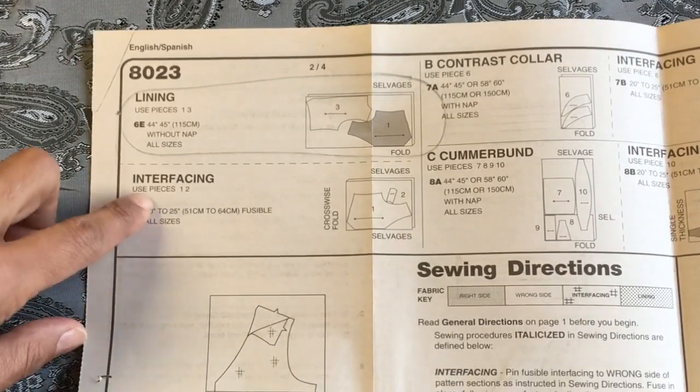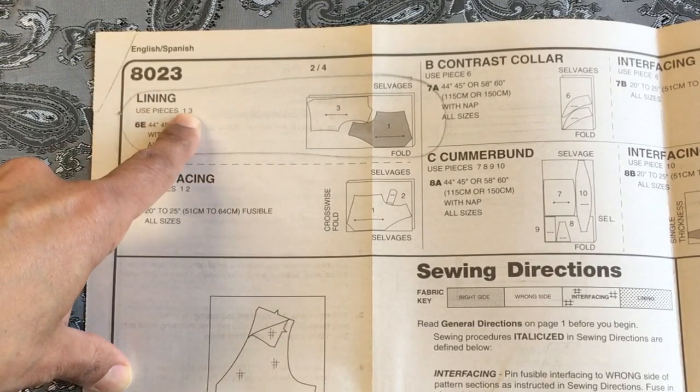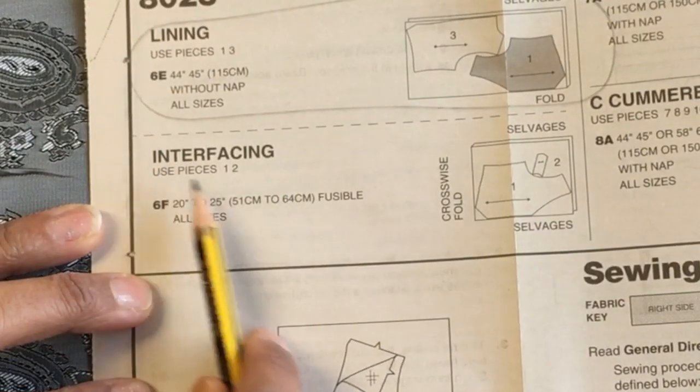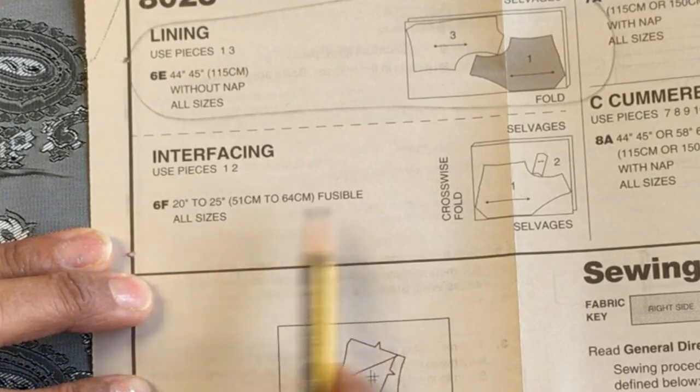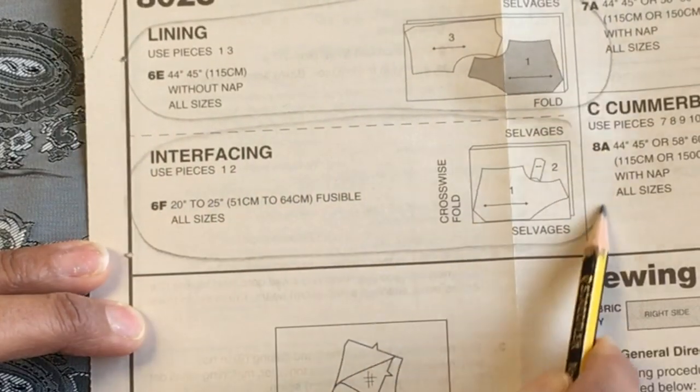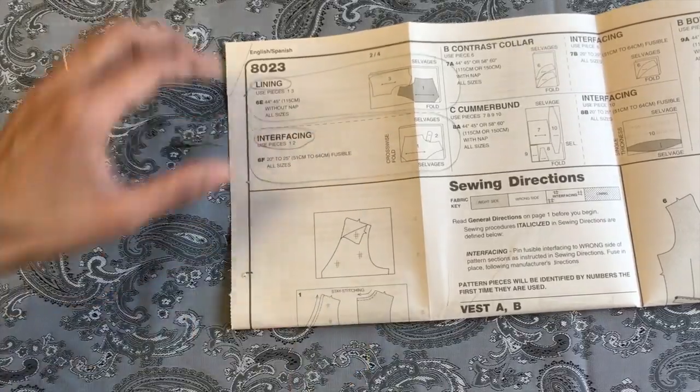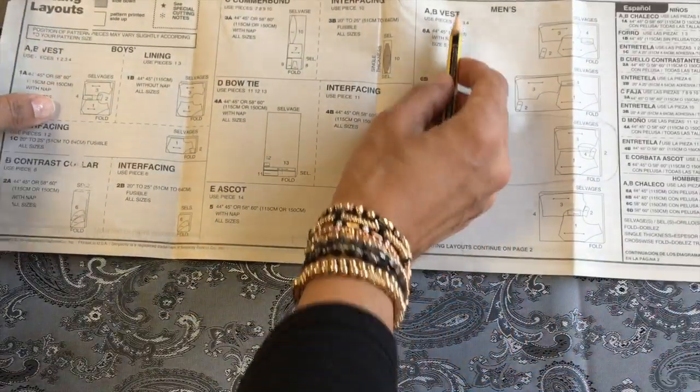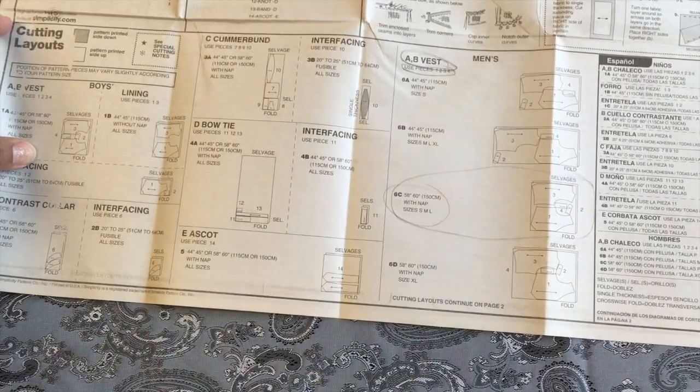That's the interfacing, I need pieces 1 and 2. 6F is the interfacing, and that's for all sizes. So I need to make sure that I circle that too. I've got to make sure I've got the lining, my interface, and my vest pieces using all those pieces there.